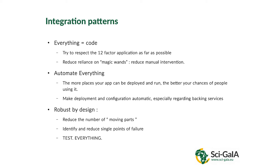That ties into the next point about automating everything. If you can express something as code, you can execute it, and if you can execute it, you should automatically execute it. The more places your application can run, the better the chance people will actually use it. Make deployment and configuration automatic so that whoever wants to provide this application can do so with a minimal amount of effort. Consider widely-used applications like those in the Chrome store — there's so little effort involved in installing them that they make it very easy to use. Aim for that. The last point is to make things robust: it shouldn't only work if you do certain things; it should work even if you don't do anything.